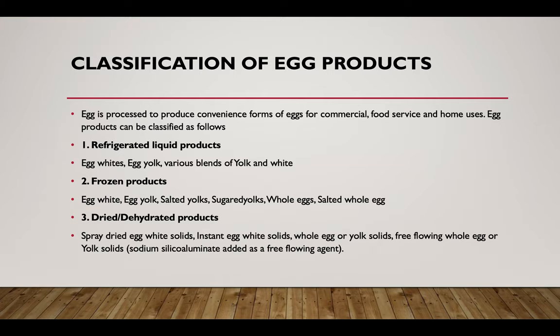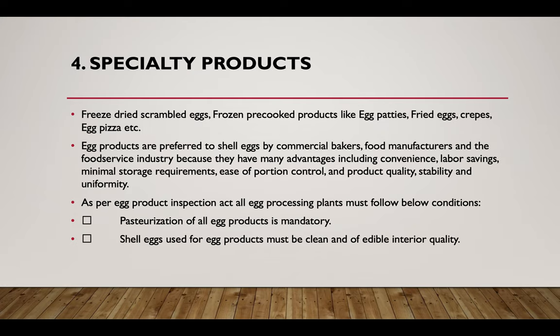Egg products can be classified into three major categories: refrigerated, frozen, and dried or dehydrated products. In refrigerated products, they include egg whites, egg yolk, and various blends of yolks and whites. In frozen products: egg white, egg yolk, salted yolk, sugared yolk, whole eggs, and salted whole eggs. In dehydrated products: spray-dried whole egg, egg whites, instant egg white solids, whole egg or yolk solids, and free-flowing whole egg or yolk solids. Specialty products include frozen dried scrambled eggs and frozen pre-cooked products like egg patties, fried eggs, crepes, and egg pizza.